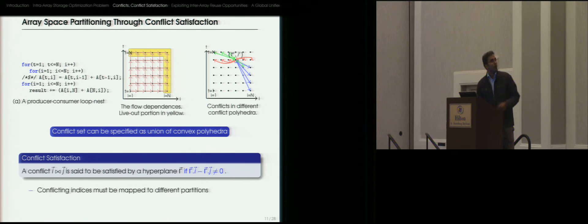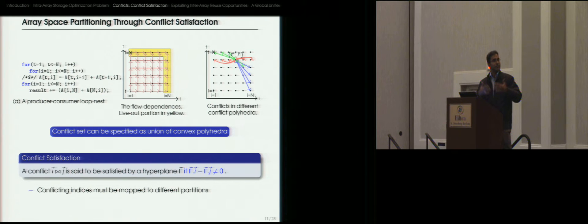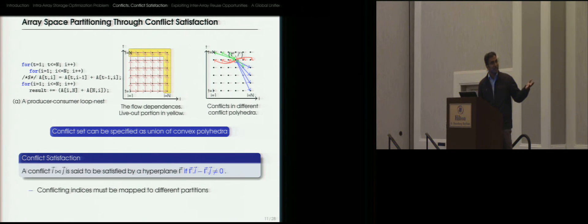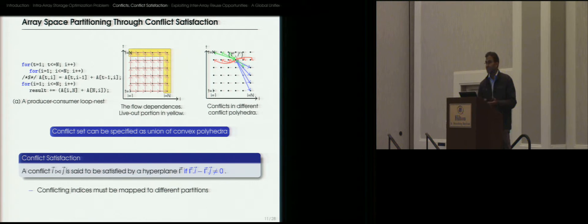We say that a conflict is satisfied by a hyperplane if the hyperplane maps the conflicting indices to different partitions. So consider a conflict between i and j, satisfied by hyperplane γ. If i is mapped to partition γ·i and j is mapped to partition γ·j, the two partitions should not be the same.